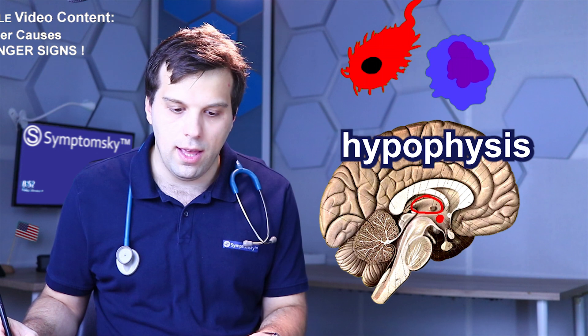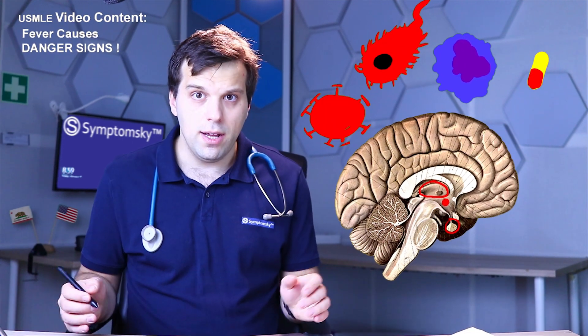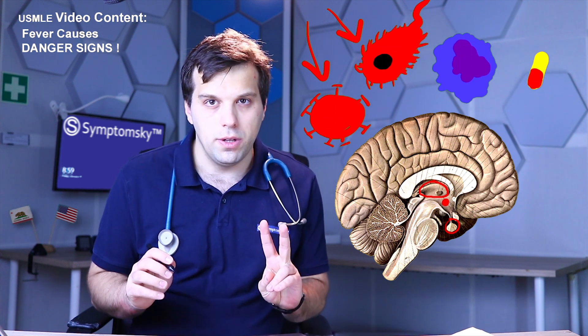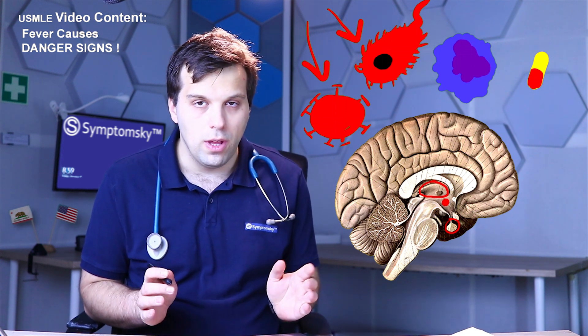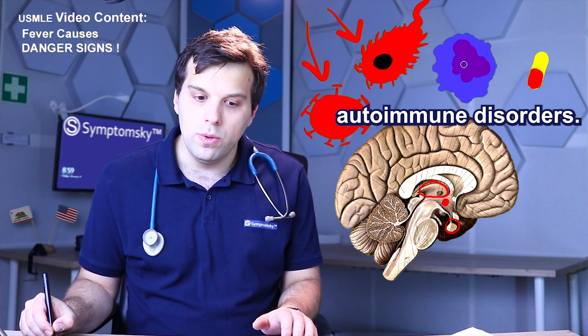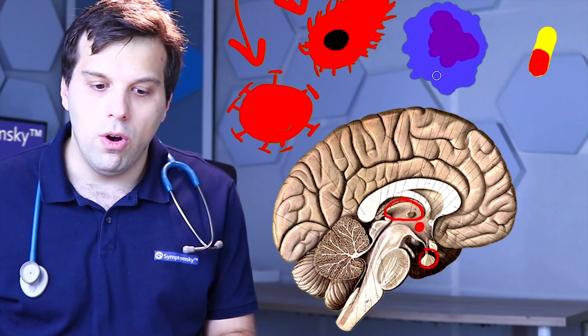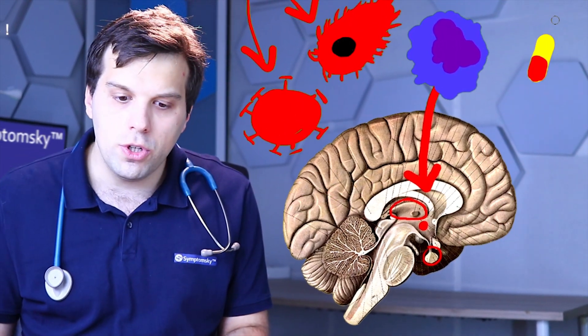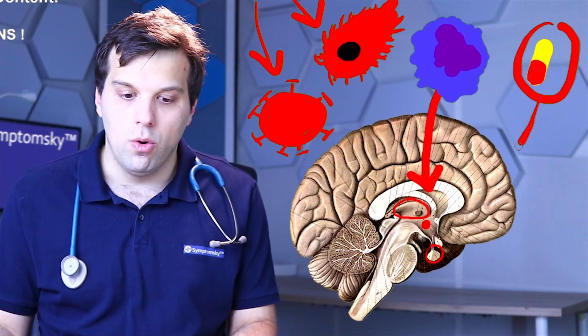Pyrogens actually affect the hypothalamus, which is right between the thalamus and the hypophysis. Besides infections with viruses and bacteria, two additional things should be mentioned: autoimmune disorders — when our own immune cells actually cause fever — and exposure to certain substances or drugs can cause fever as well.